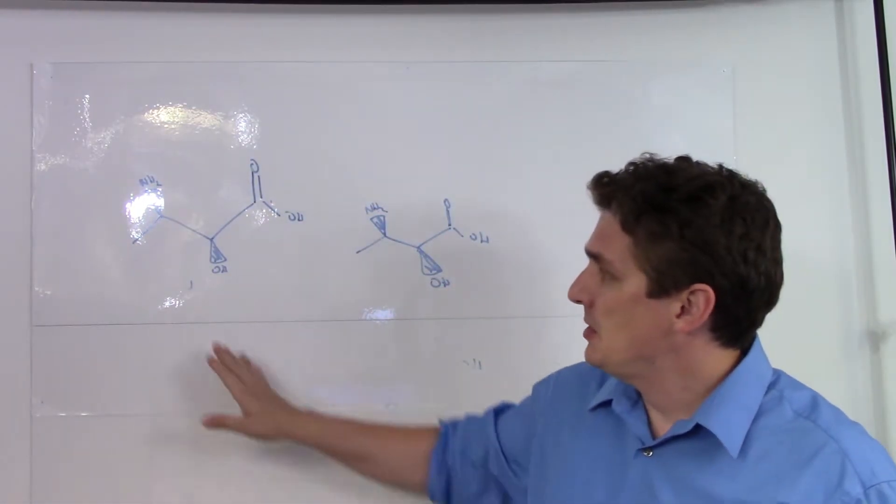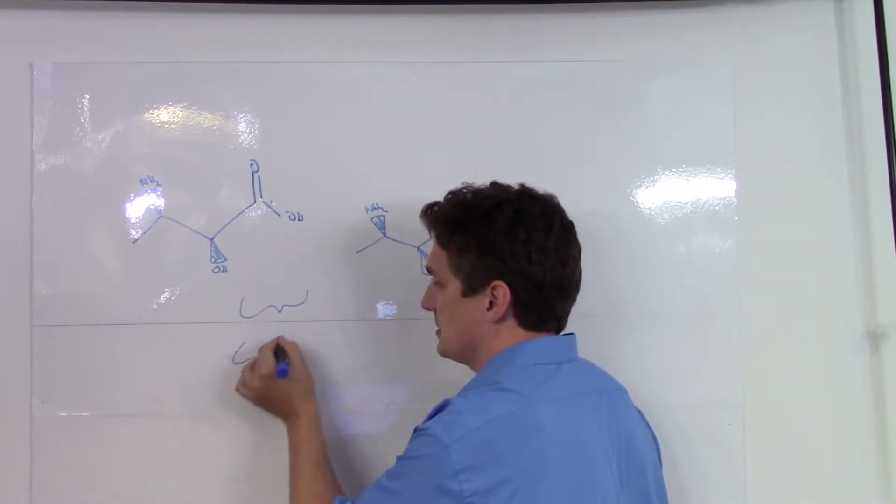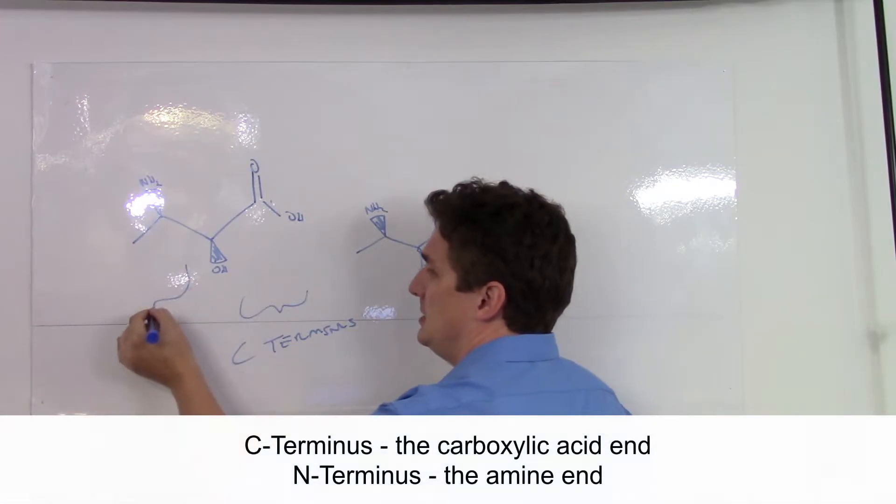So on each end of the molecule we have two parts. We have what's called the C-terminus and the N-terminus.